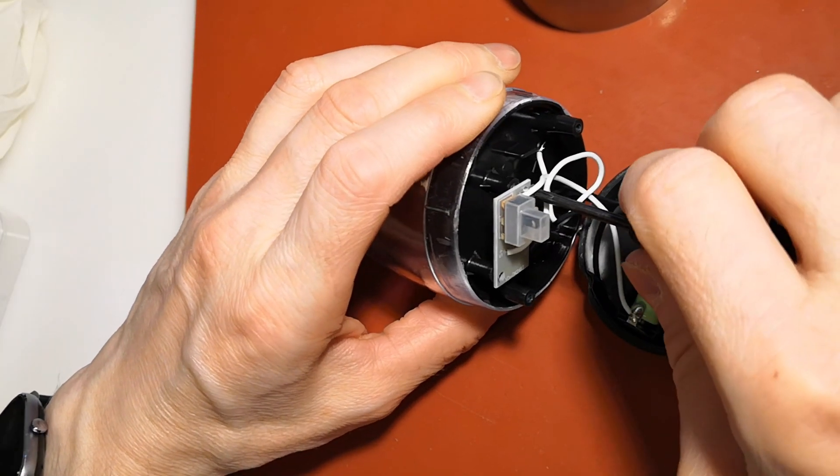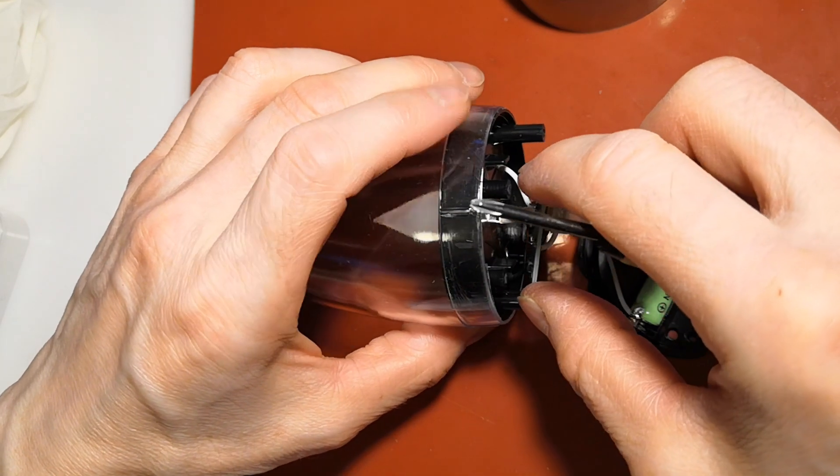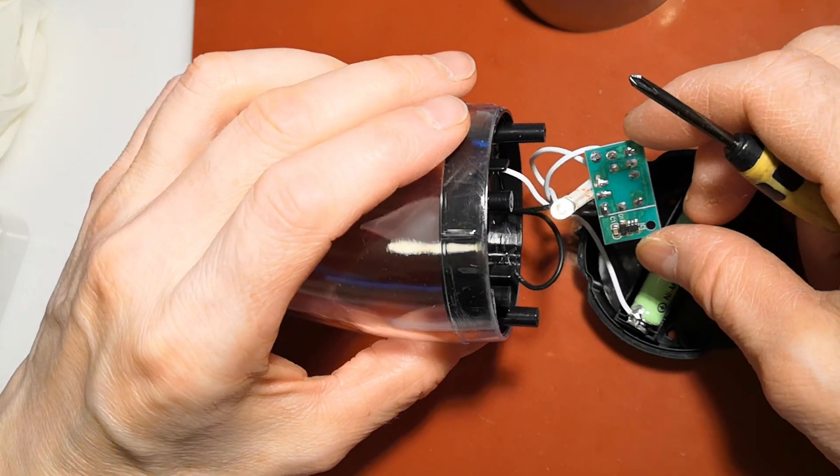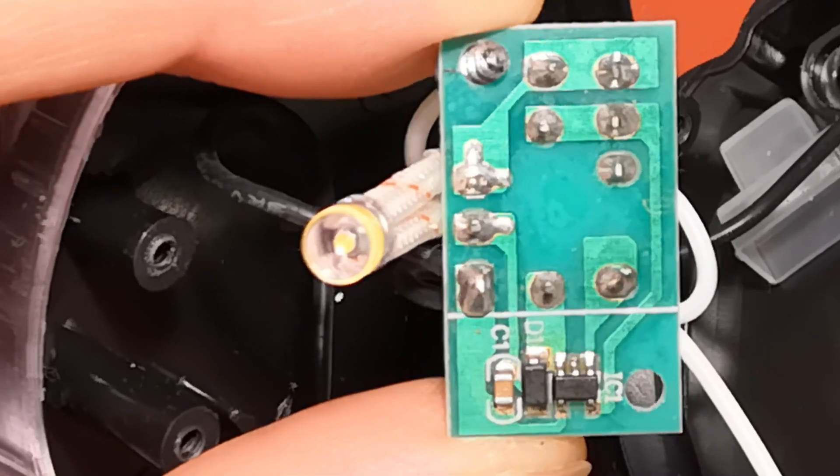The circuit board comes off with a couple of screws, and soon we'll see what's on the other side. The connection is simple, with very few components.